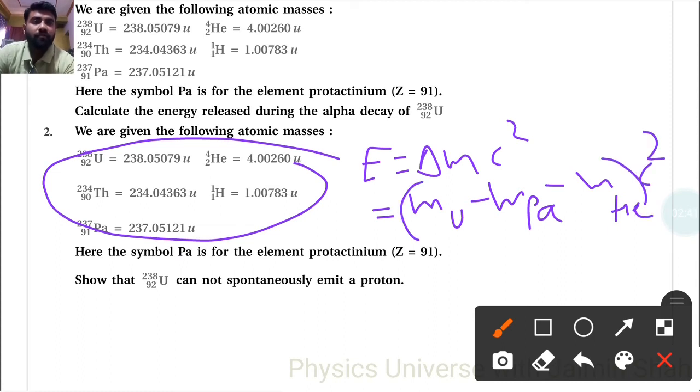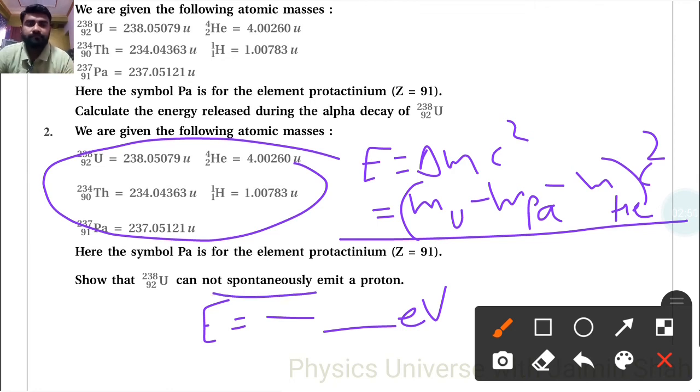Whatever energy you will find, that energy will be negative. And negative energy of electron volt always, it is never spontaneous. For that reaction to be done, we have to apply, we have to strike particle on the uranium and then it will proceed.